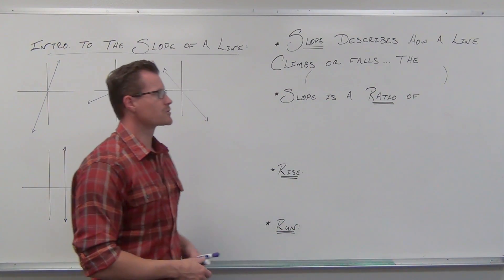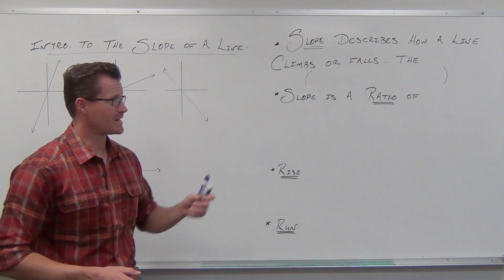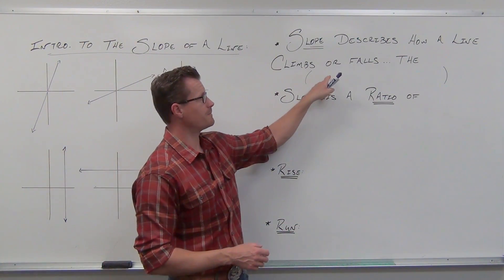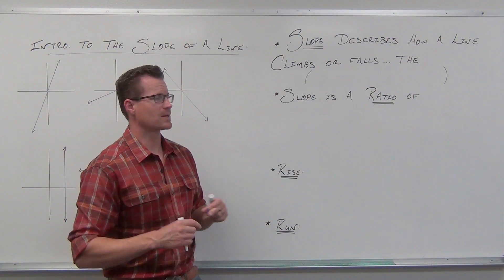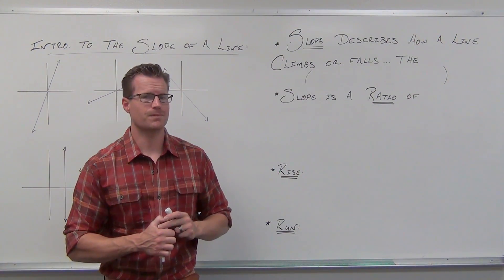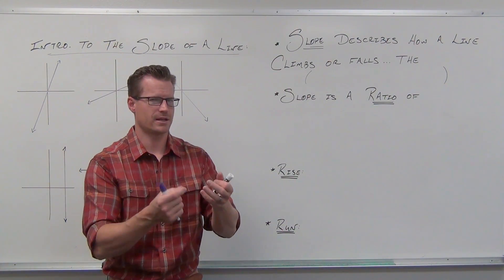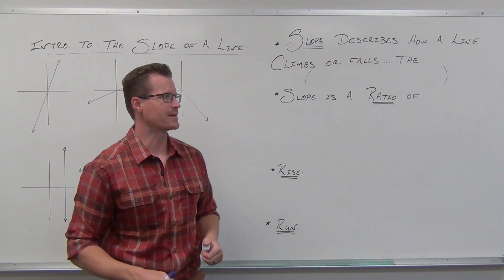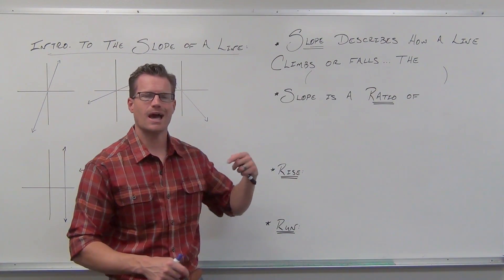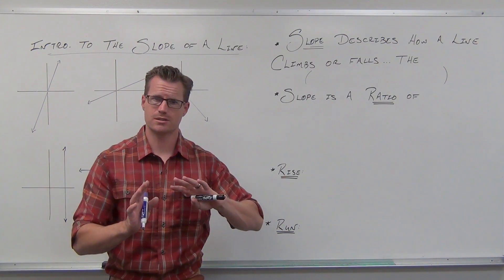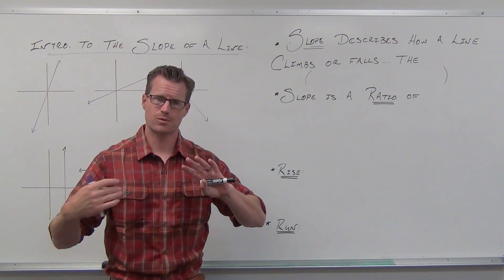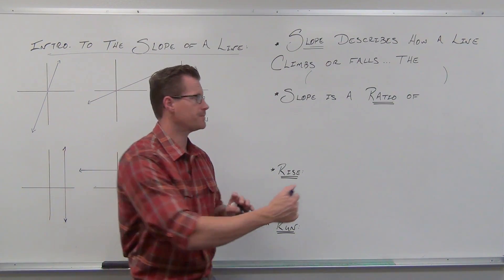The first thing we need to realize is that slope describes how a line climbs or falls. You have to be aware that this is always as we read from left to right.